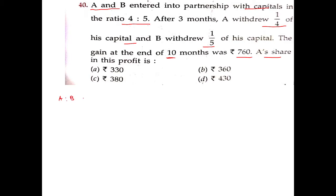A is to B is equal to 4x multiplied by 3 for the first 3 months. After 3 months, A withdrew 1 by 4, so plus 4x minus 1 by 4 of 4x.